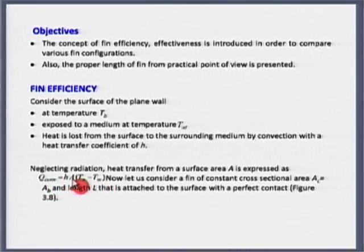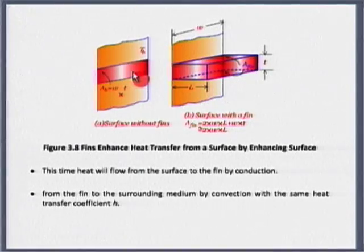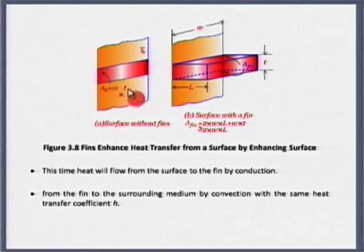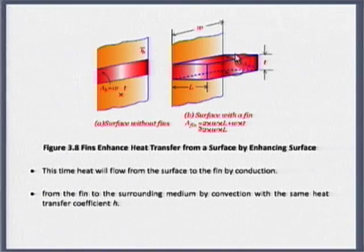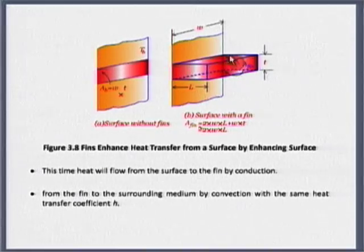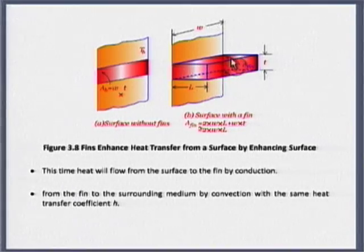Q is H·A·(T_S − T∞). Remember when we started fins, we said: I have this base area on which I am putting a fin. This base area is lost as far as direct heat transfer is concerned — it is replaced by an extended surface, which has additional area on the top, bottom, and tip, in addition to the base area A_fin = W × t.